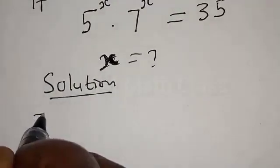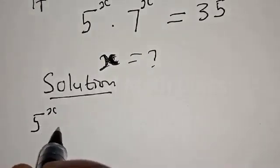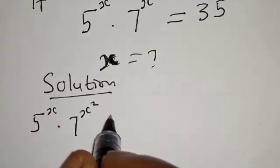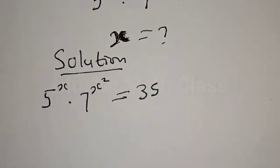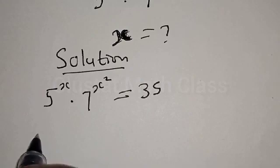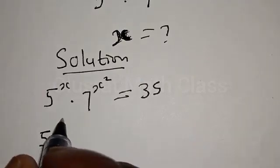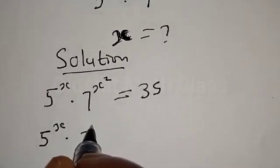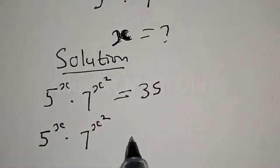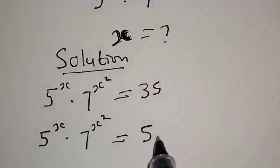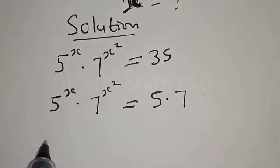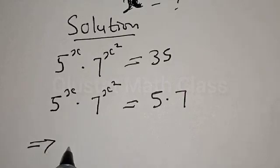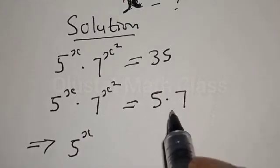We have 5 raised to power x multiplied by 7 raised to power x² equal to 35. This can be rewritten as 5 raised to power x multiplied by 7 raised to power x² equal to 35, since 35 is equal to 5 multiplied by 7.